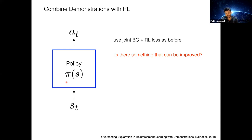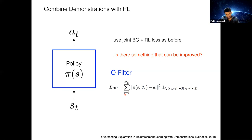We modify the behavior cloning loss: instead of applying it for all states and actions, we only impose the BC loss when the Q-value of the expert action is larger than the Q-value of the action produced by the policy. Intuitively, as training progresses, we trust the policy more and more because it should lead to higher reward. This is called a Q-filter, which helps implement that intuition.